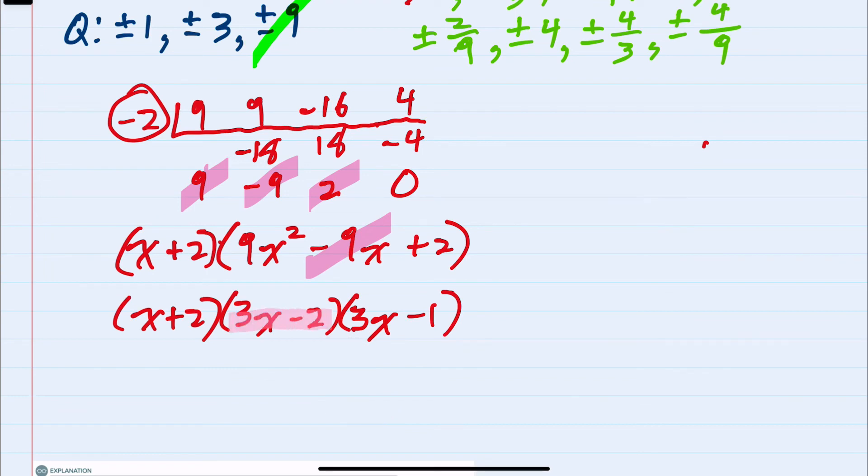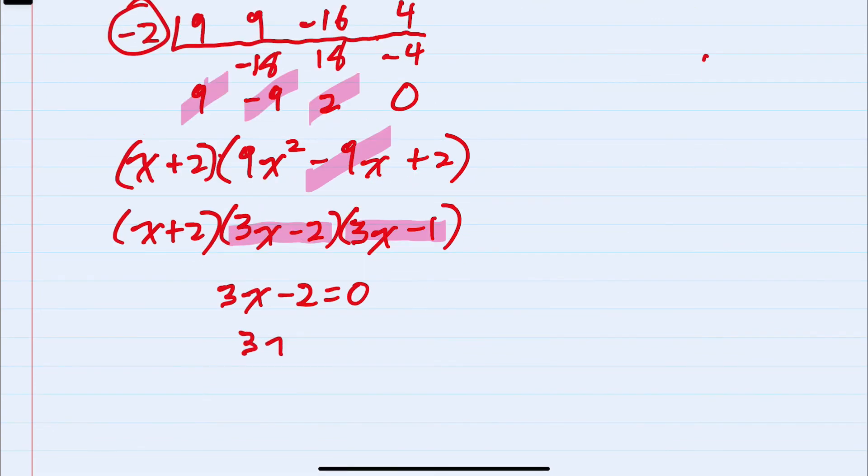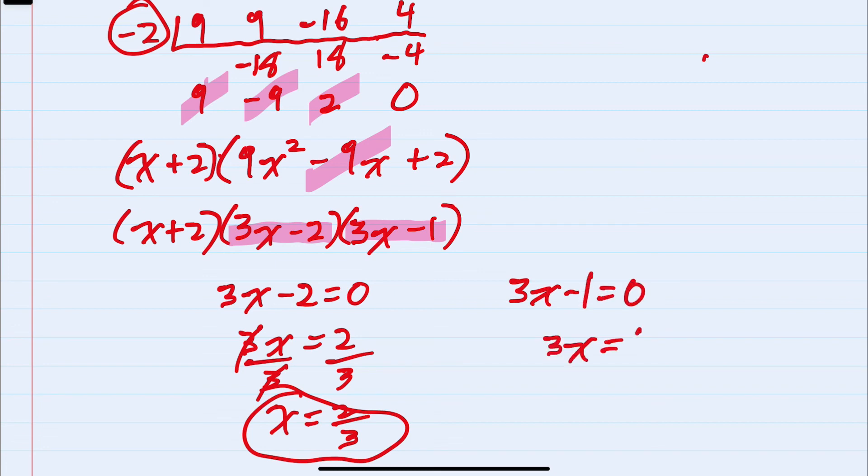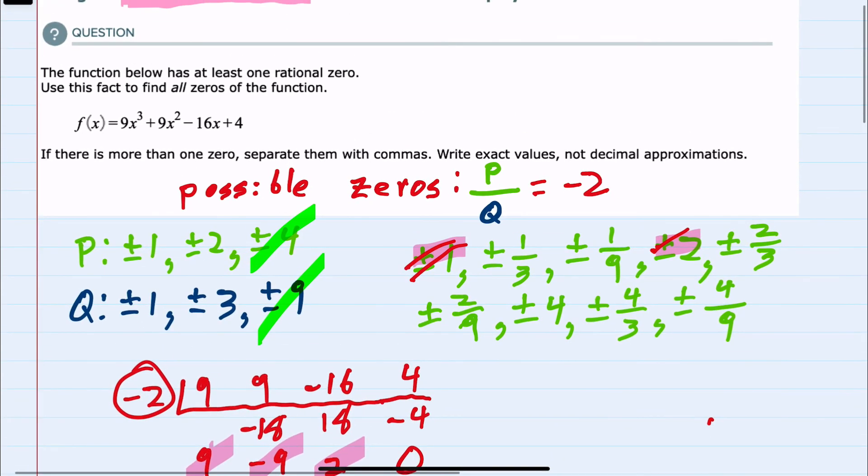And these will provide additional zeros. 3x minus 2 equals 0 gives us 3x equals 2, and dividing, x equals 2 thirds. So this is my second zero. And then from the other side, 3x minus 1 equals 0, 3x would equal 1, and x equals 1 third. So I have my two additional zeros, 2 thirds and 1 third, and I can write those along with the other zero. And this would be my full list of rational zeros for this polynomial.